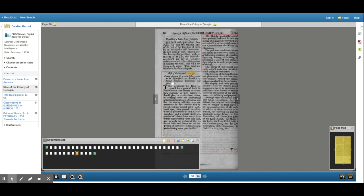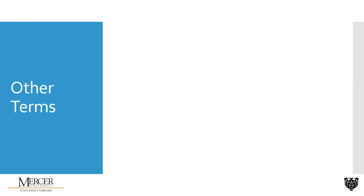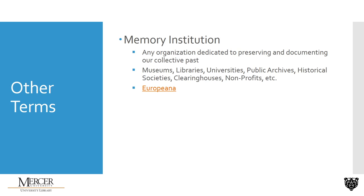That sums up scholarly databases. Now I want to speak briefly about a few other terms you will come across when looking for online archives. The first term is memory institutions. Knowing what kind of memory institutions are out there can really help in your search for primary source documents. Memory institutions are any organization dedicated to preserving and documenting our collective past, and doing so goes well beyond traditional archives and libraries — it can include museums, historical societies, hobbyists, nonprofit collectors, etc. More often than not, you will need to do research on who has what primary sources and then search for that particular group's digital archive. However, there are some archives out there that do a really good job at collecting a lot of resources in one place. I want to show you just one more example of an online archive that takes from a whole lot of different memory institutions — it's called Europeana.